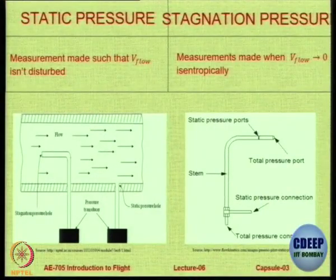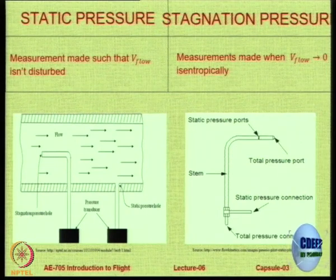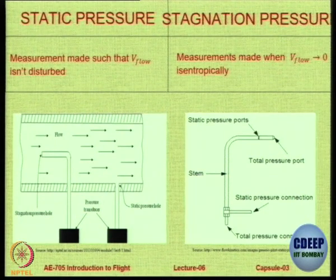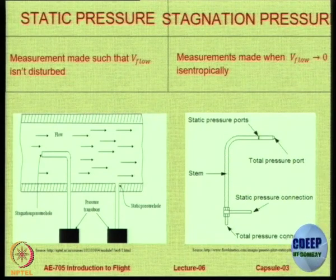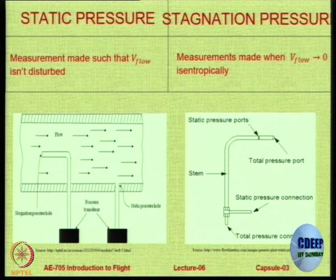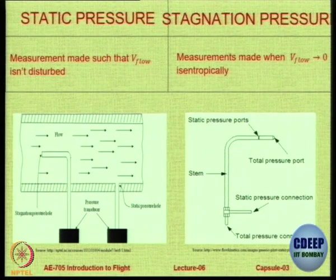In static pressure measurement there is a pipe or probe that is flush with the inner edge of the tube — not protruding inside — and the pressure it measures is called static pressure. On the left is a tube that probes inside, disturbing the flow, and that measures total pressure. On the right-hand side there is a similar arrangement: a total pressure connection and on the side a static pressure connection. The bent stem has static pressure ports on the sides and in the front a total pressure port that takes the incoming flow head-on.